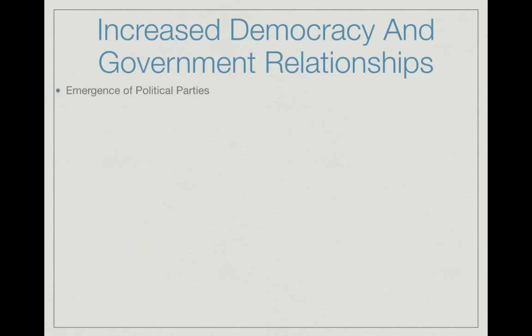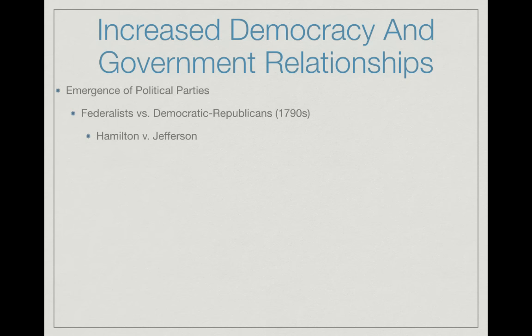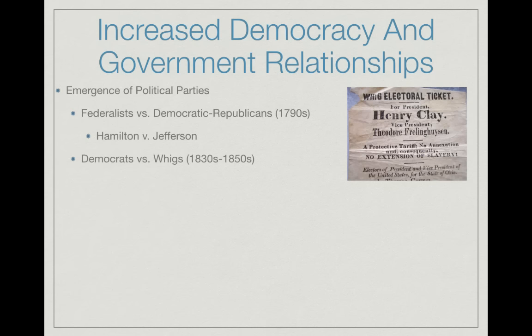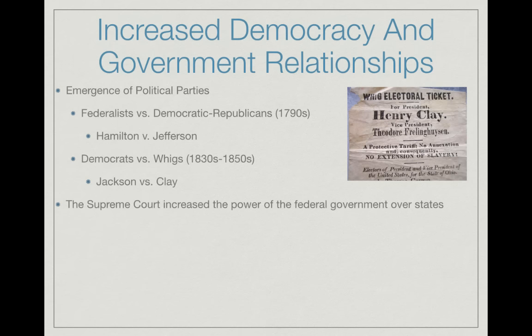Let's start by talking about the emergence of political parties. You should be familiar with the Federalists versus the Democratic-Republicans of the 1790s, born out of Hamilton's financial plan and the French Revolution. Hamilton was the leader of the Federalists, Jefferson the leader of the Democratic-Republicans — Hamilton favored the wealthy, Jefferson the common man or farmer. Then we have the second political party system from the 1830s–1850s: the Democrats versus the Whigs, led by Andrew Jackson and Henry Clay respectively. Sadly, Clay lost the 1844 election.